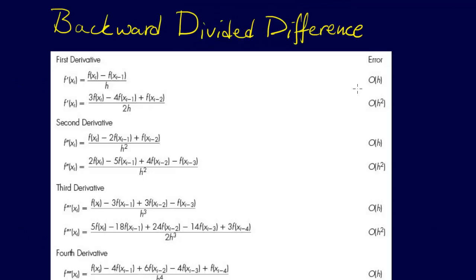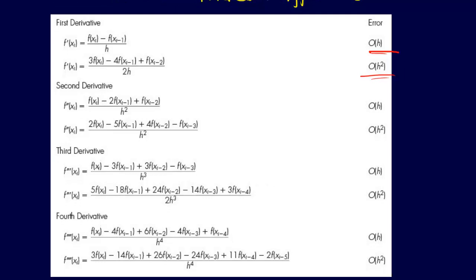We have the backward divided difference formulas. For that, we see we have error order h for using just the two points. We have error order h squared. We could derive another one for the first derivative. We can also derive different formulas for the second derivative, the third derivative, the fourth derivative, and so forth. There's an associated error with each of those.